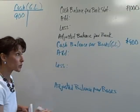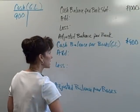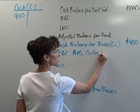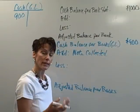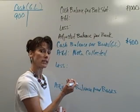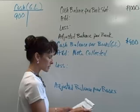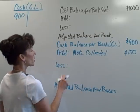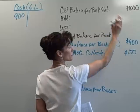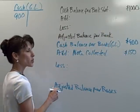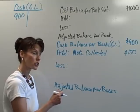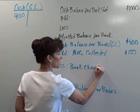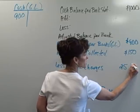Looking at our bank statement, we see that there is a note the bank collected for us. The bank collected a note from one of our customers — instead of the customer sending us a check in the mail, it sent it directly to our bank, and the bank deposited it into our account. The note collected was $150. We're going to add that to our general ledger account. The bank has already added it to the bank statement balance; we want to add it to our general ledger cash account. The bank also charged us monthly bank charges of $25, which we're going to subtract out.